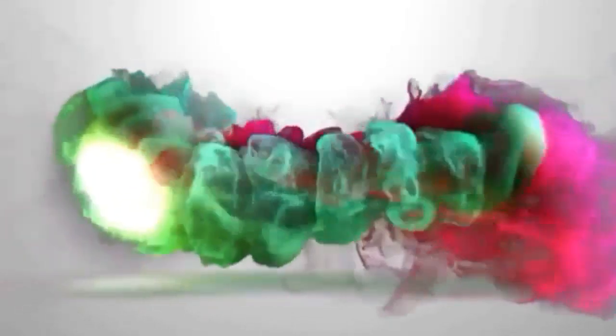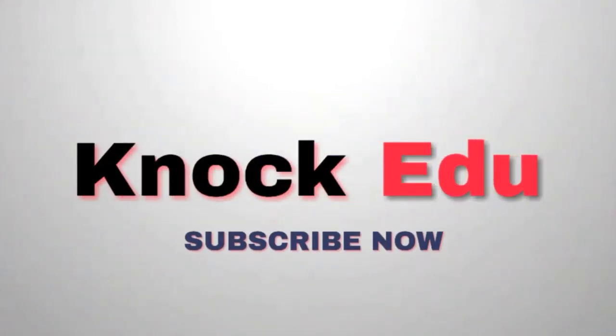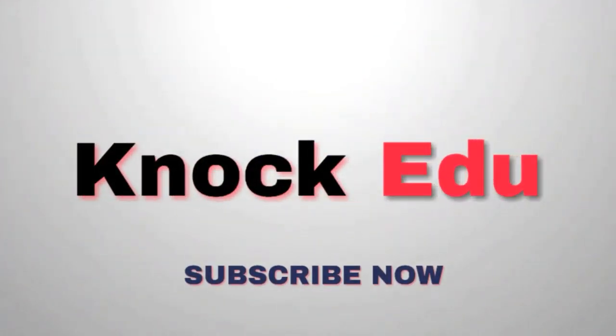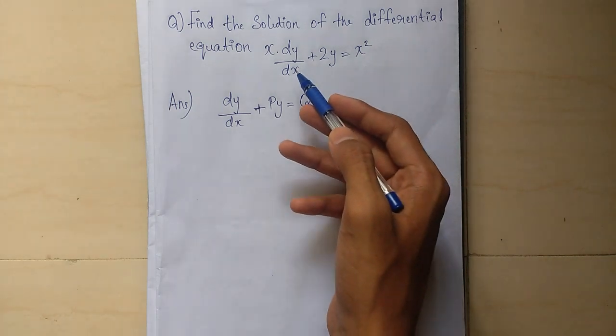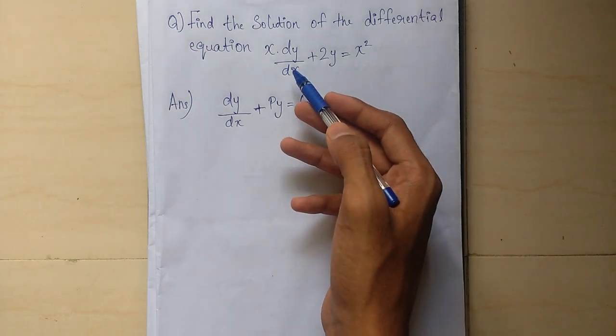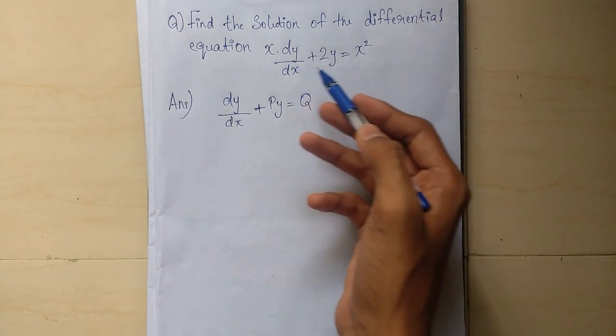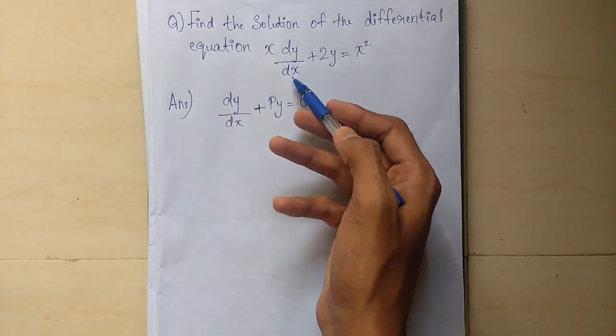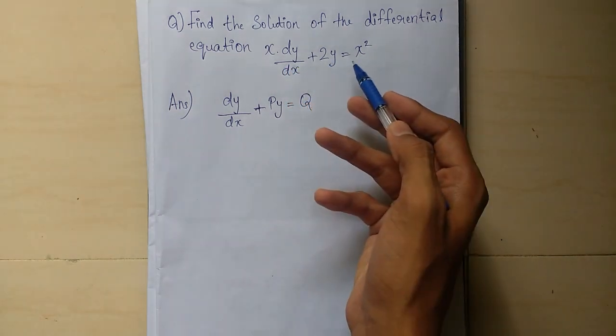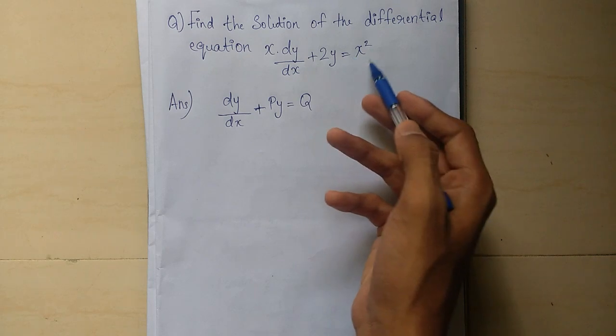Let's go to the video. Friends, let's take a quick question: x into dy by dx plus 2y equals x squared. We have to find the solution to this equation.